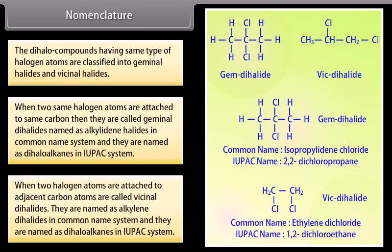When two halogen atoms are attached to adjacent carbon atoms, they are called vicinal dihalides. They are named as alkylene dihalides in common name system, and they are named as dihaloalkanes in IUPAC system.